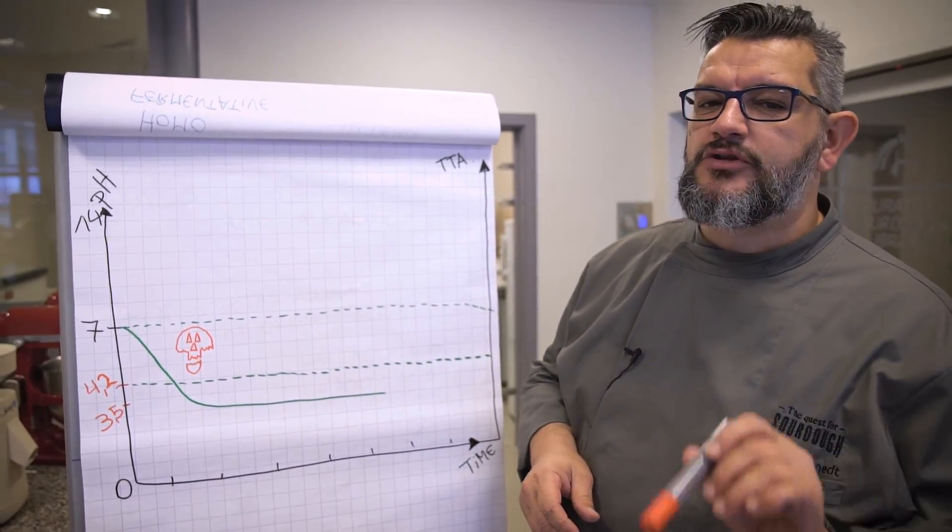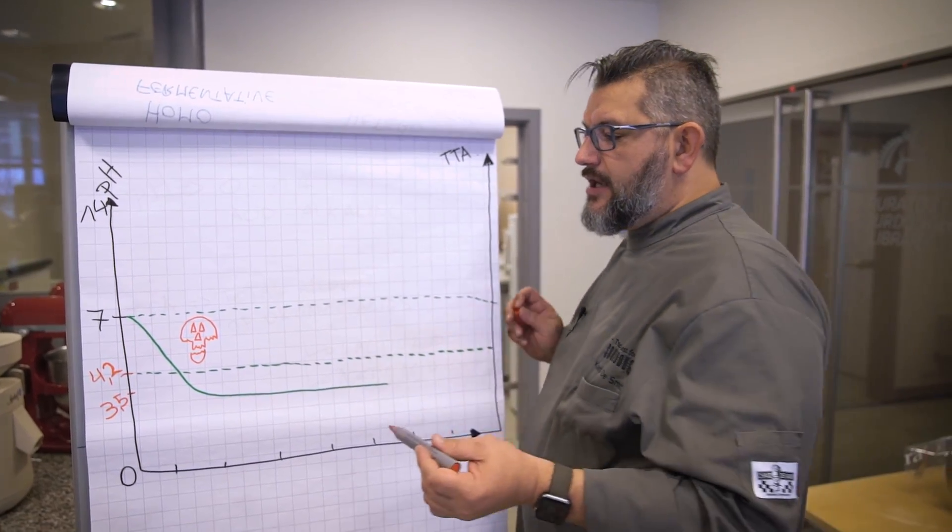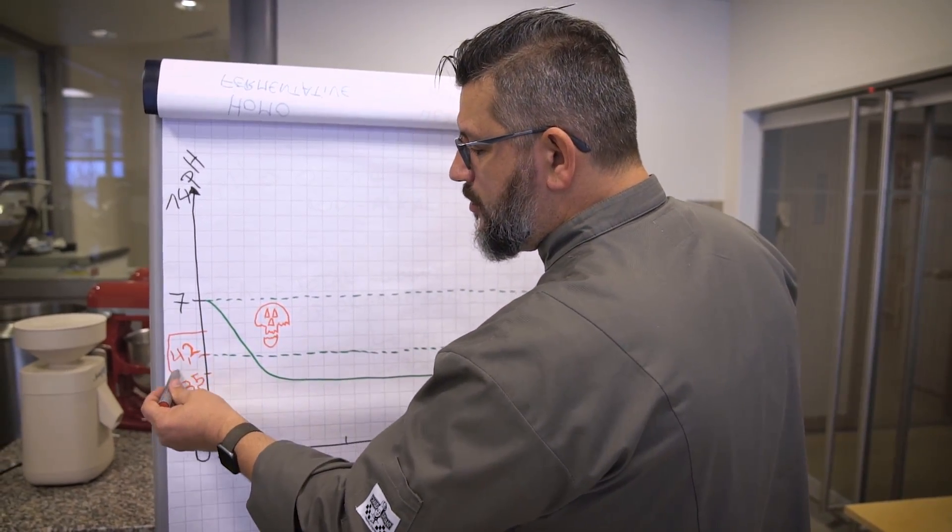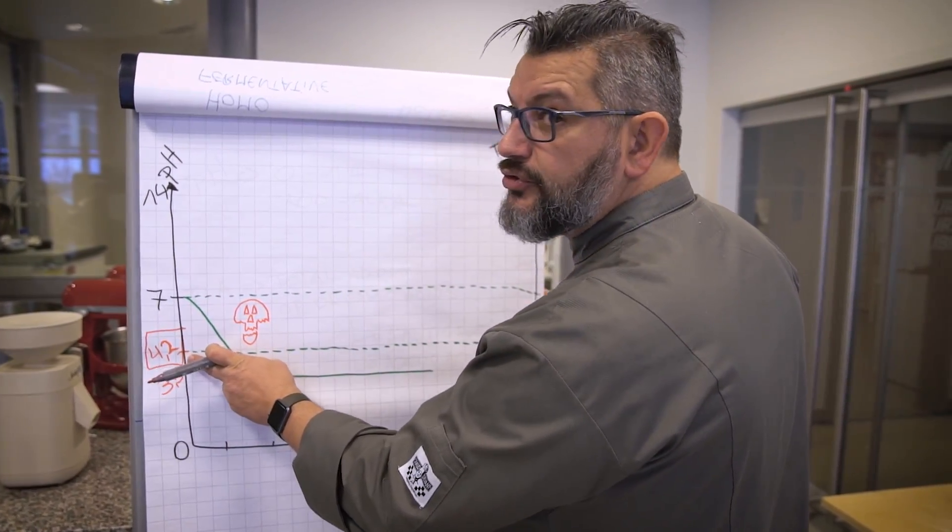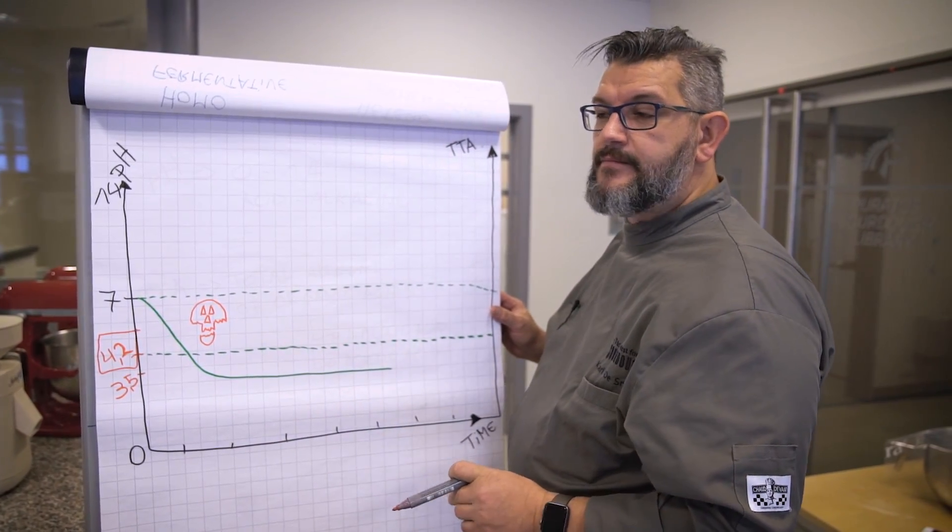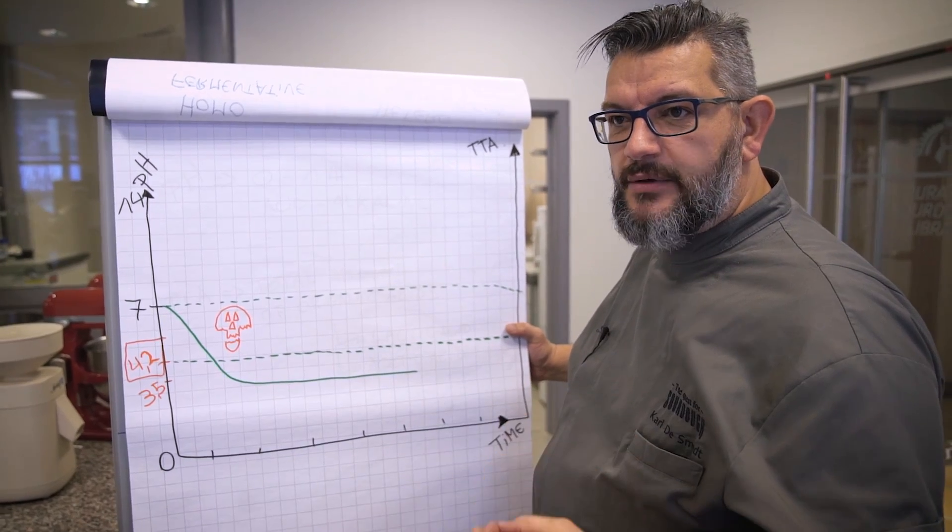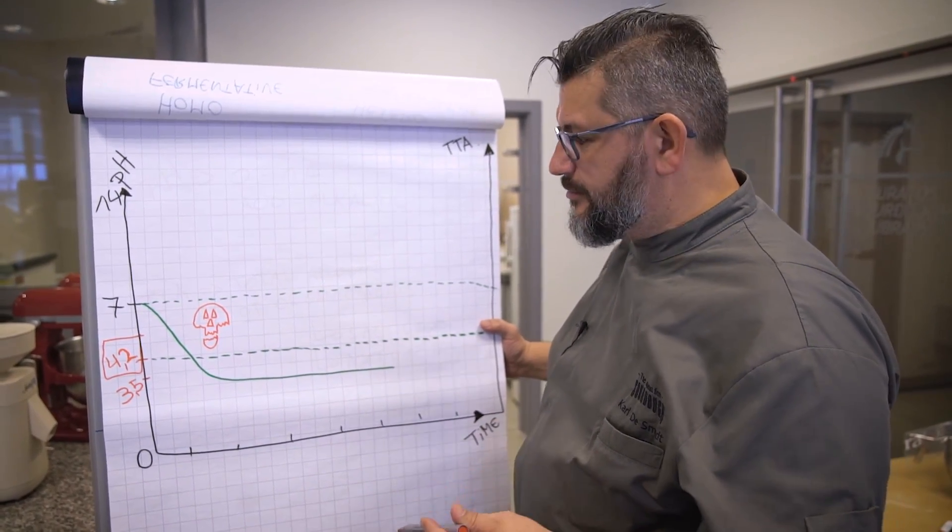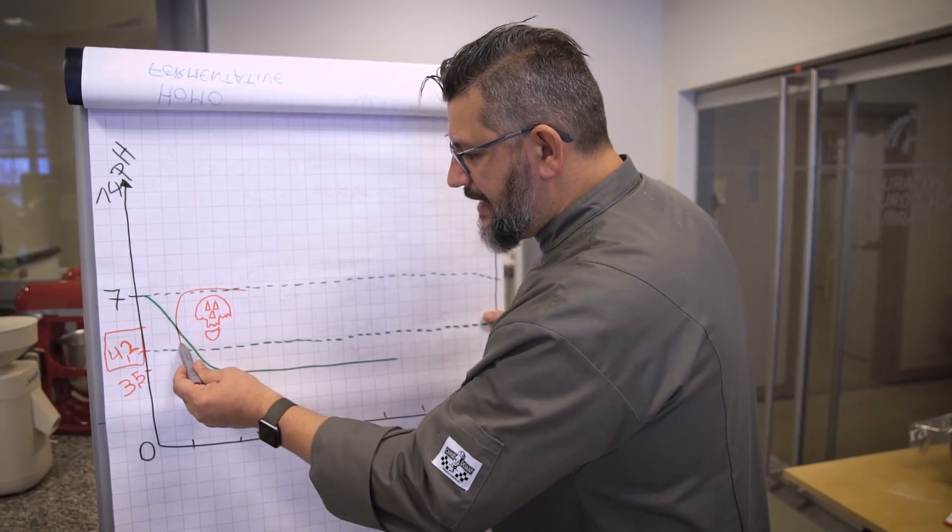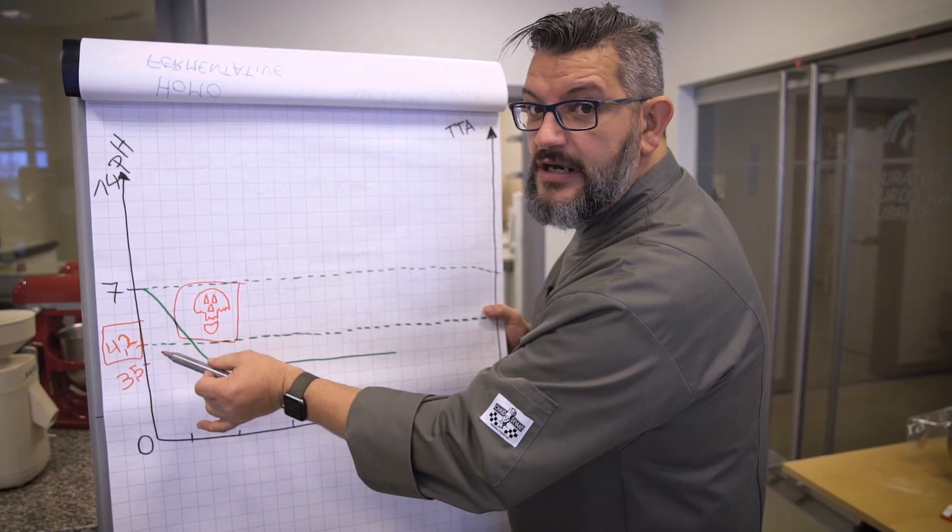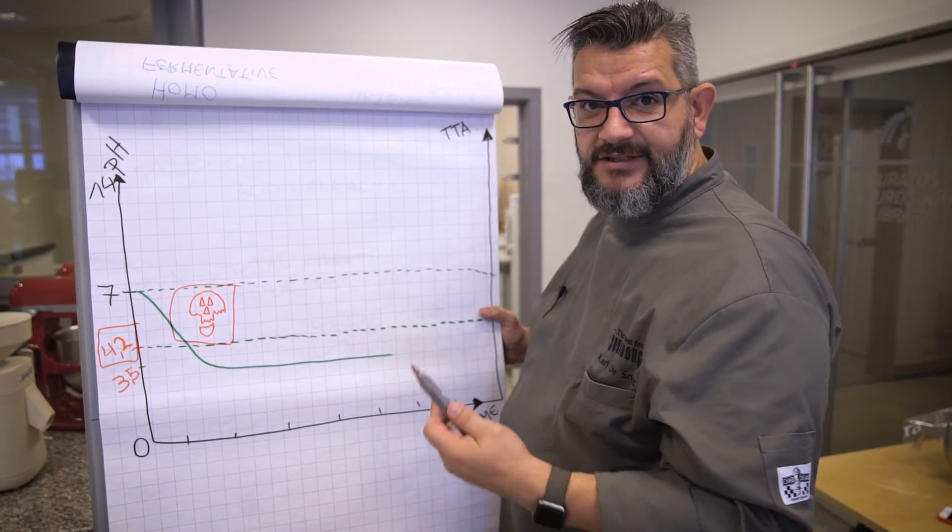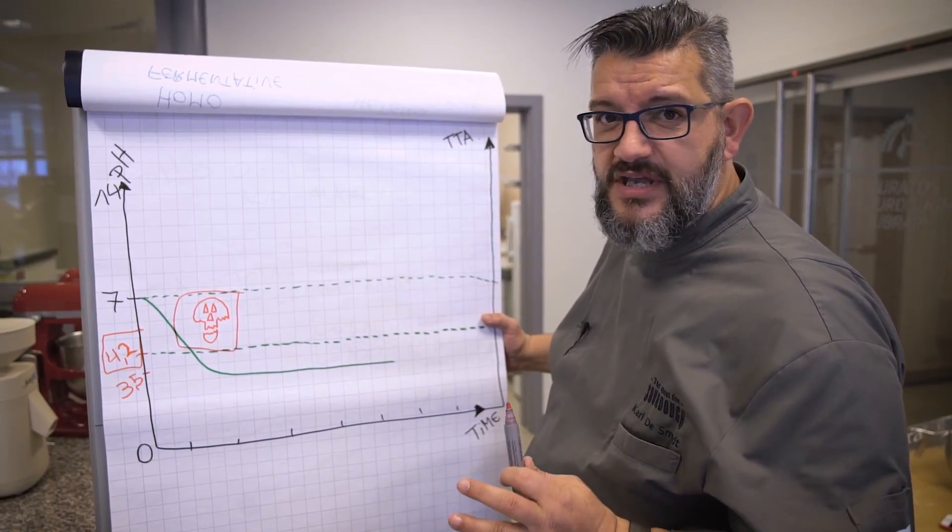Most important thing to know is that we need to go below 4.2 pH. From the moment you are below the 4.2 pH, you know that your sourdough is pathogen-free. Because Mother Nature has decided that everything that is below 4.2 pH, the pathogens are killed. That's the beauty about fermentation.